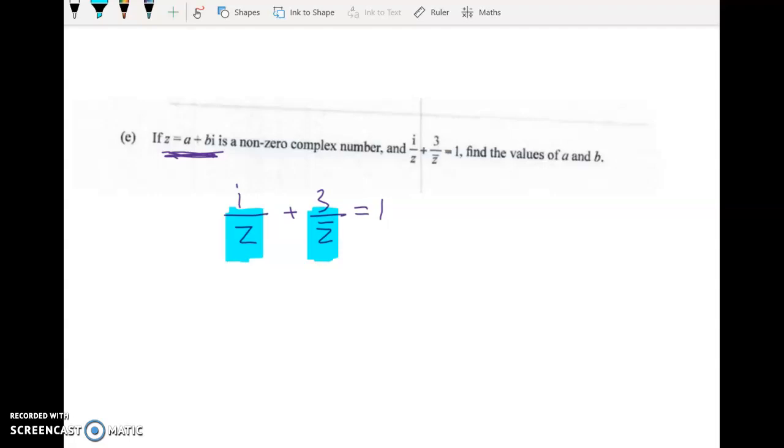So the first thing that I did here is I actually didn't substitute, it's fine if you did, but I straight away just went like this. So we've got i times z conjugate plus 3 times z is equal to 1.